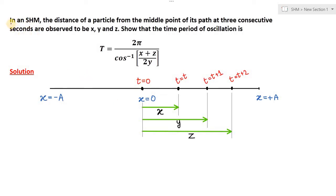Hello, students. A very nice question for IIT-JEE. In an SHM, the distance of a particle from the middle point of its path — meaning the mean position x equal to 0 — at three consecutive seconds are observed to be x, y, and z. Show that the time period is 2π divided by cos inverse of (x plus z) divided by 2y.